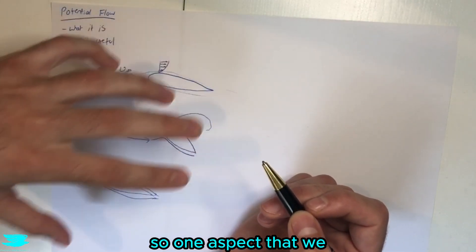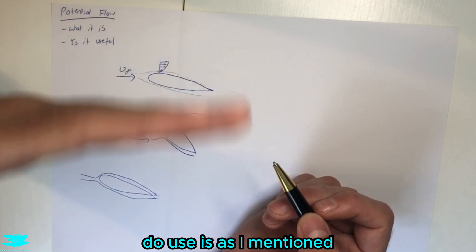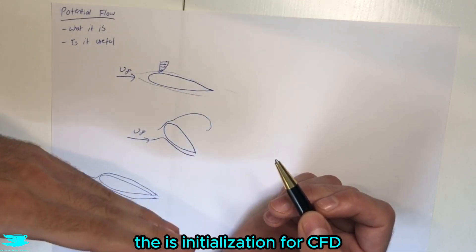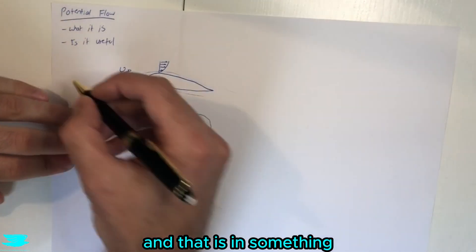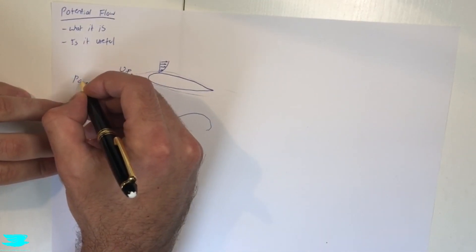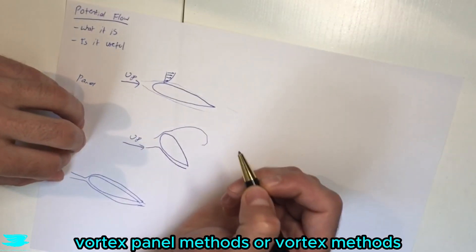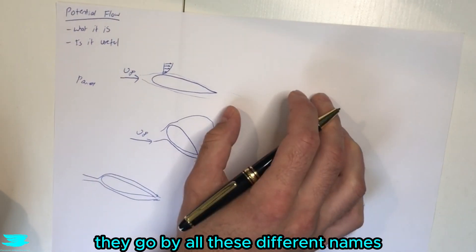So one aspect that we do use is, as I mentioned, the initialization for CFD. But there is another way that we use potential flow a lot and that is in something called panel methods, or vortex panel methods, or vortex methods. They go by all these different names.